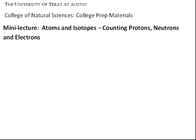In this mini lecture we're going to be looking at atoms and isotopes and how to use information given to us from the periodic table for counting the number of protons, neutrons, and electrons in these atomic species.